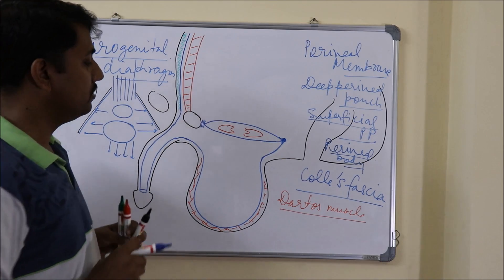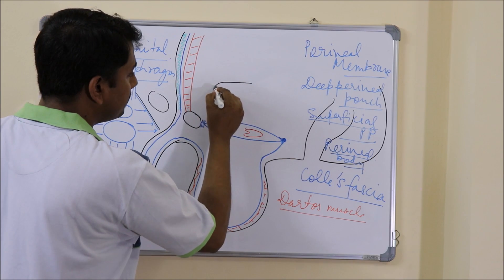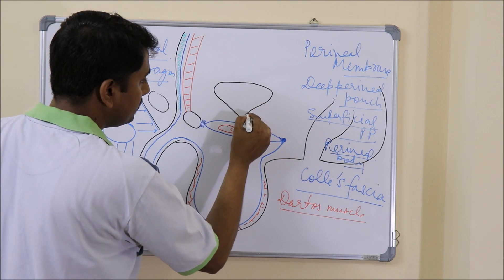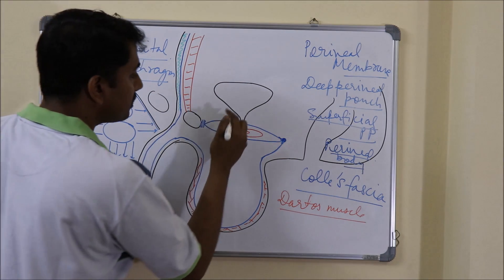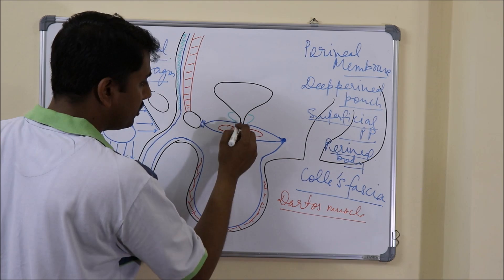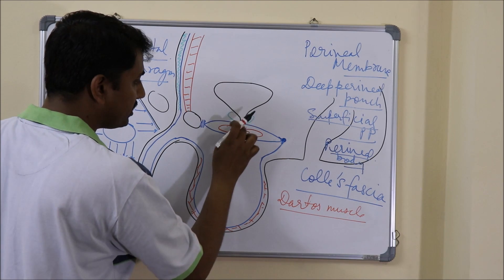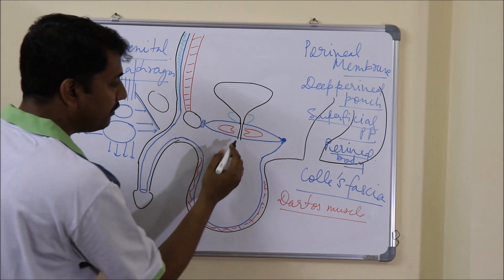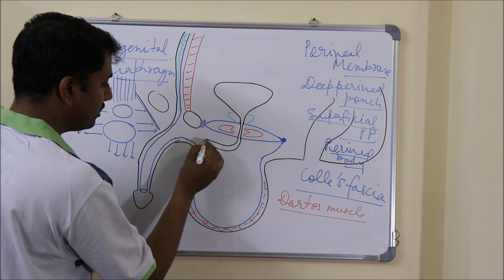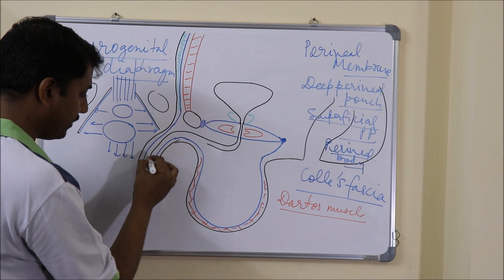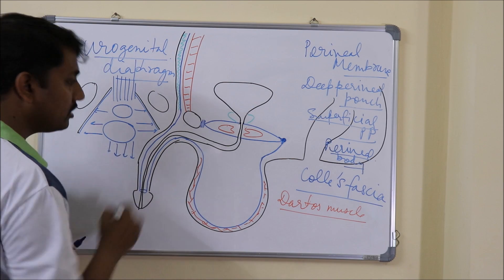Now let us put the urinary bladder and urethra in this diagram. This is the urinary bladder. This is the part of the prostatic urethra which is covered by the prostate. It then pierces the urogenital diaphragm and becomes the membranous urethra, then comes into the superficial perineal pouch and becomes the penile urethra or spongy urethra, enters into the penis, and opens outwards.